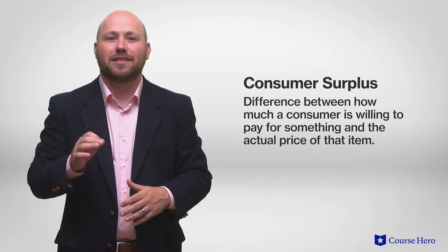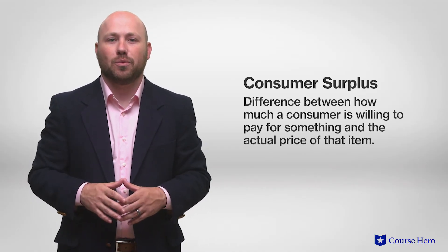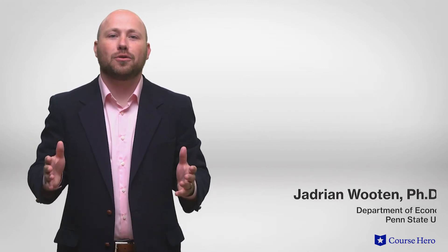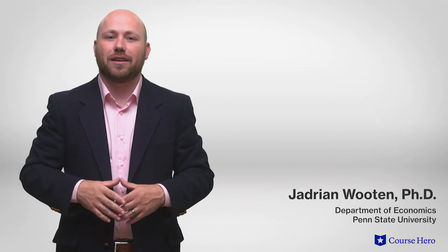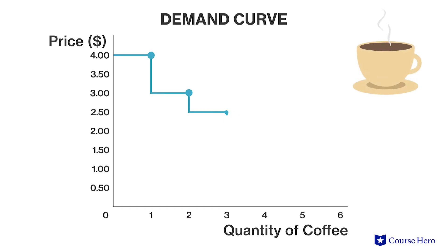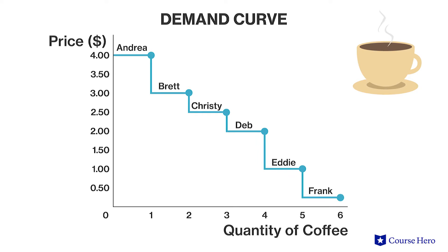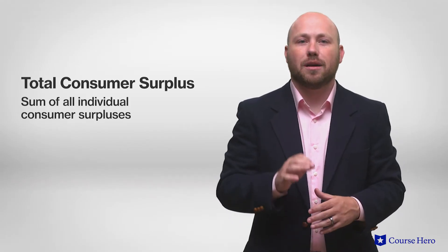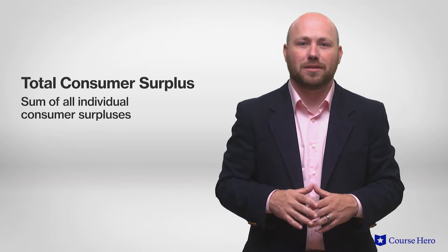Consumer surplus is calculated as the difference between how much a consumer is willing to pay for something and the actual price of that item. For total consumer surplus, it can be calculated as an area. If you are drawing a demand curve as a step diagram, each individual's consumer surplus — the area below a consumer's willingness to pay and above the market price — is also the area of a rectangle. Total consumer surplus is the sum of all individual consumer surpluses, so it is the total area below the market demand curve and above the market price.